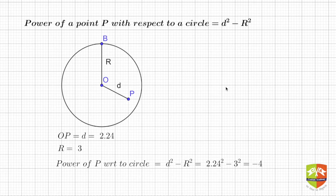How is the power P defined? It is defined as D square minus R square. What is D? D is nothing but the distance between the center of the circle and the point P, and R is the radius of the circle.